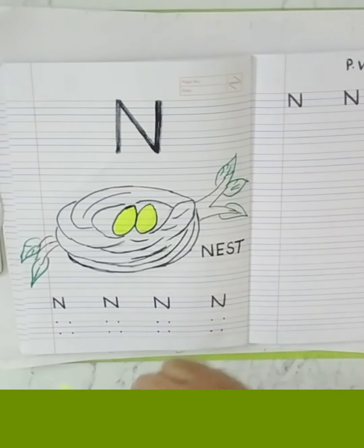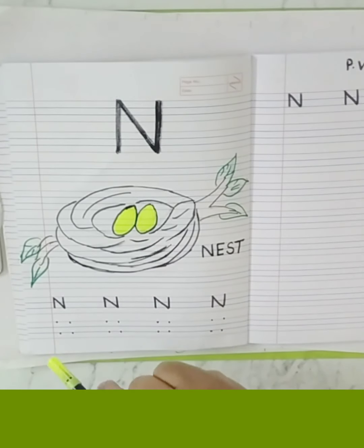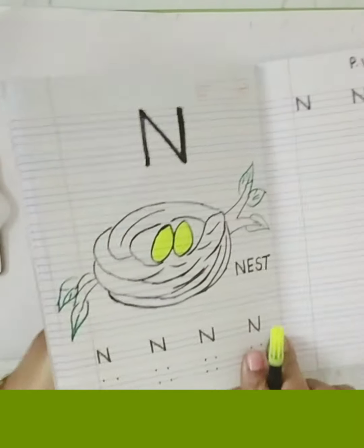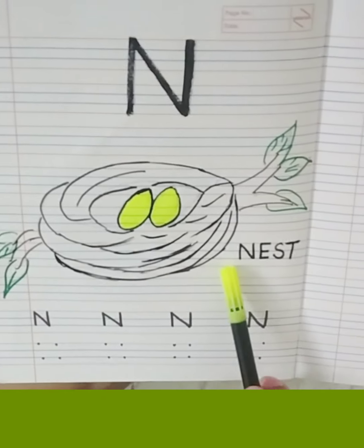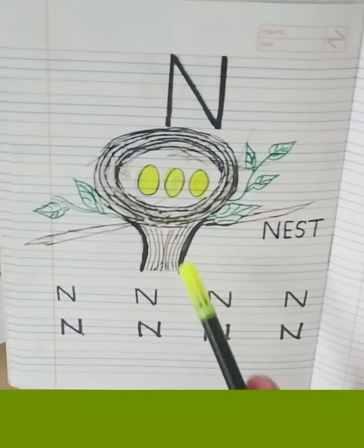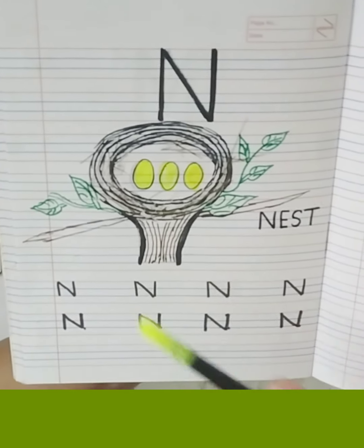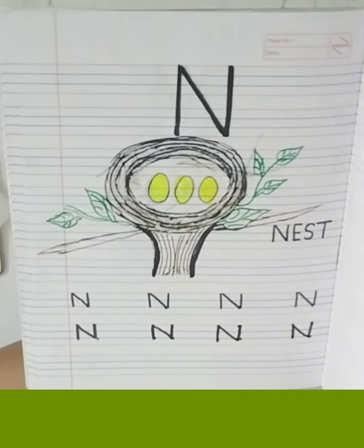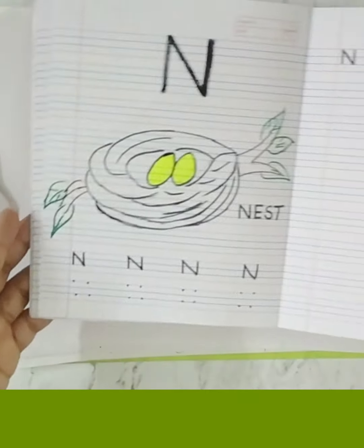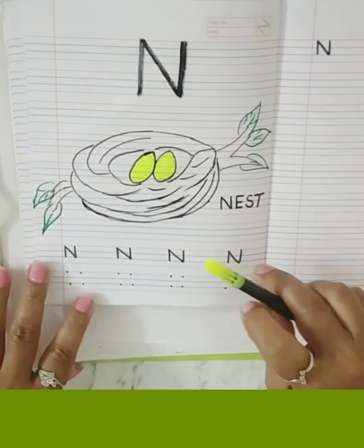N for kya? N for nest. So parents, if you find this drawing easier you can make this, otherwise you can make this one also. Aapko jo bhi easy lagti, aap yeh drawing bana lo ya phir yeh drawing bana lo. Jo bhi easy lagti woh drawing aap bana ke de do bachon ko English ki notebook mein.